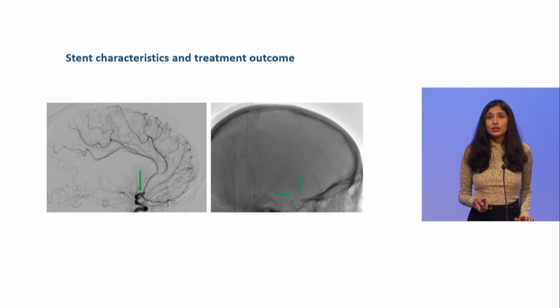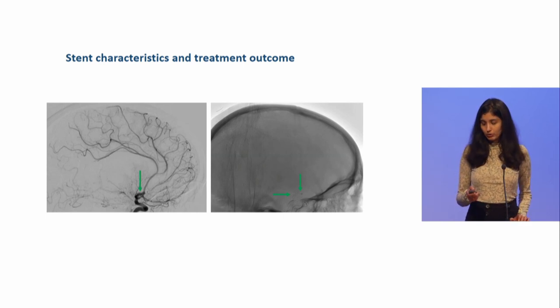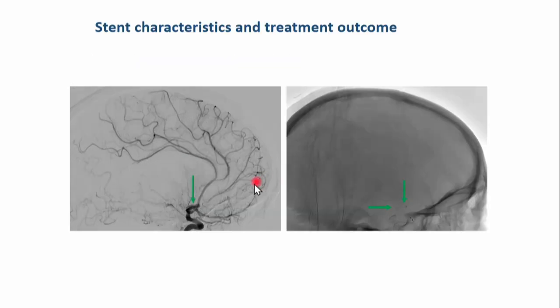Furthermore, we assessed if there is an association between the stent characteristics during the treatment and if it influences the outcome of the treatment, but more in a technical sense. For this, we studied how the stent was placed in each pass of the treatment. As you can see here, what you see here is a DSA scan of the patient during the procedure of the occlusion here, and the placement of the stent on the right.